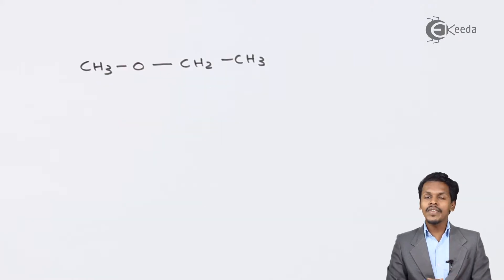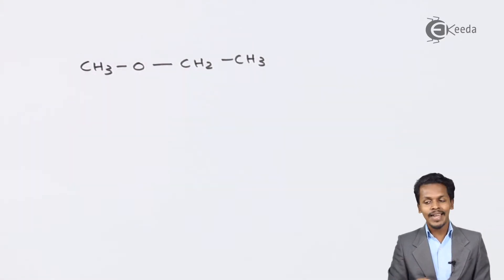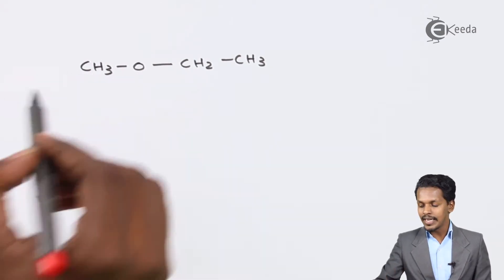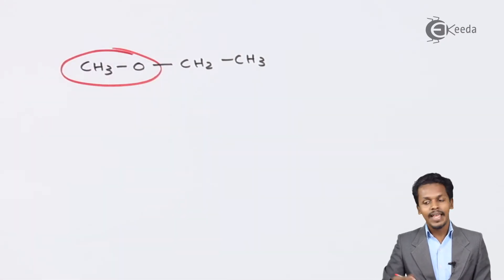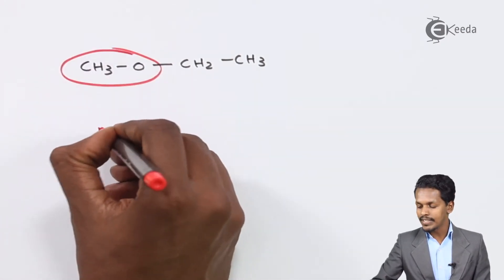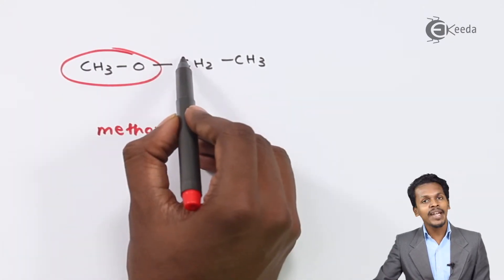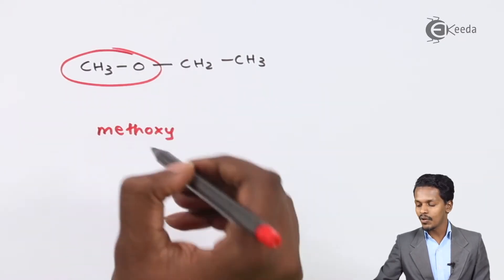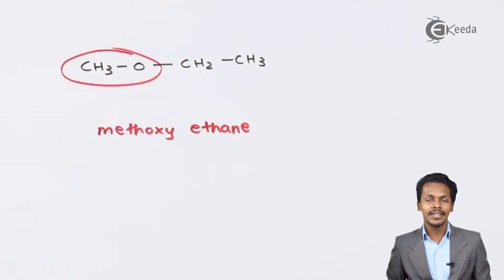Here is the first example for IUPAC nomenclature. We observe a methyl group and an ethyl group. The ethyl group has more carbon content compared to the methyl one, so the smaller member — the methyl group — goes with the oxygen atom and is called methoxy. This methoxy group is attached to the first carbon atom of ethane, so we call it methoxyethane. That is the IUPAC nomenclature for this compound.